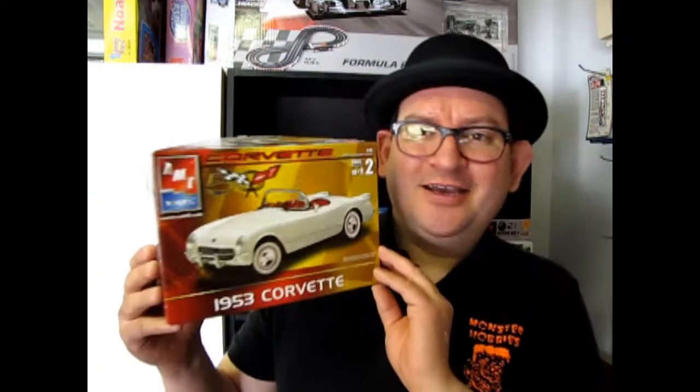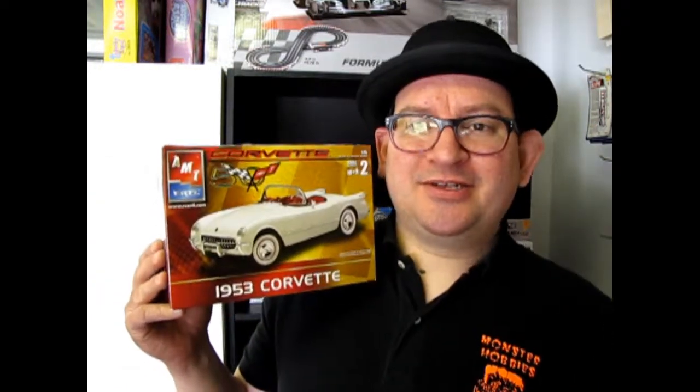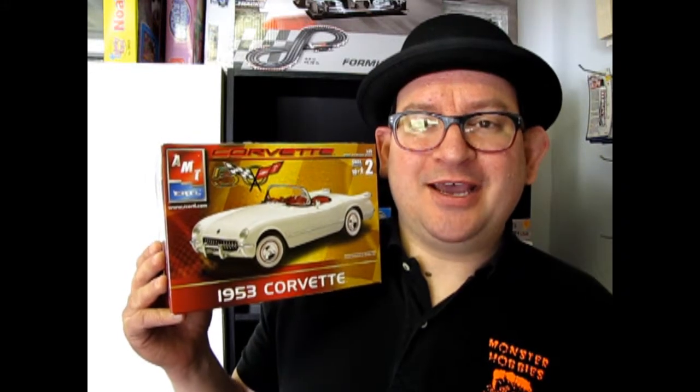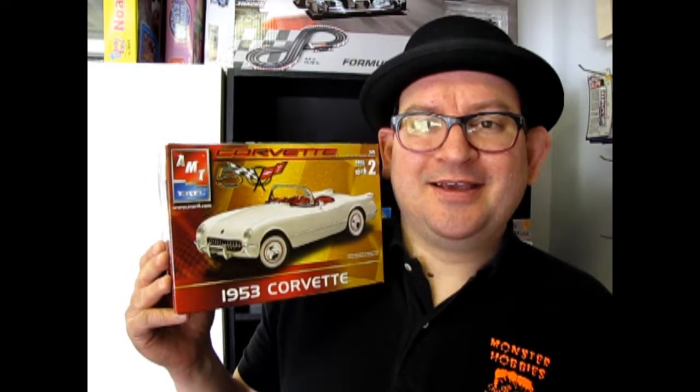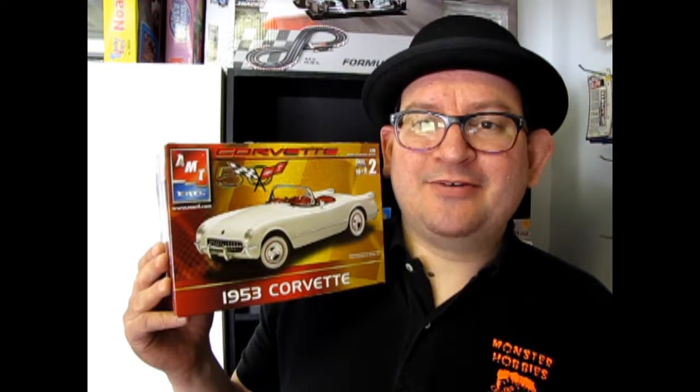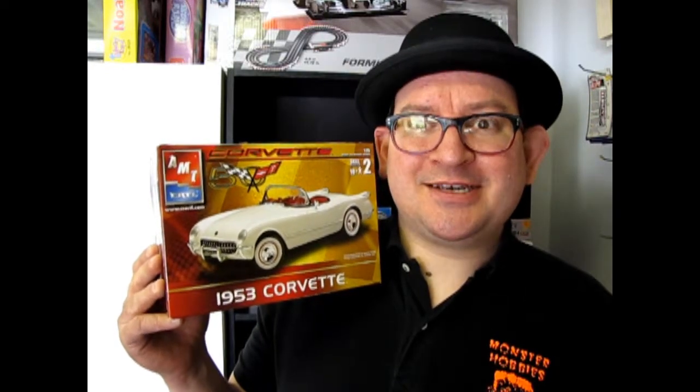Hello everybody, my name is Trevor Selescu and welcome back to our continuing series of What's in the Box, where we look at model car kits. Today I've got a classic one from my own collection, this is the 50th anniversary 1953 AMT Corvette kit. Now let's go down and open up the plastic on this baby.